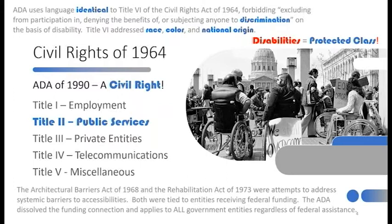The Architectural Barriers Act and Rehab Act both required entities receiving government funds to address removal of systemic barriers. The ADA dissolved that funding connection, so all government entities, regardless of whether they receive federal assistance, are required to remove barriers to accessibility. Title III addresses barrier removal by private entities — gas stations, movie theaters, retail stores, strip malls, and so forth — making the ADA all-encompassing in protecting the rights of the disabled group.